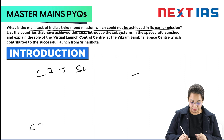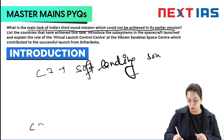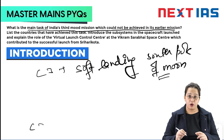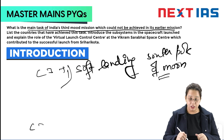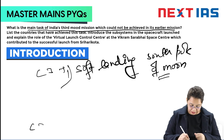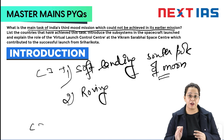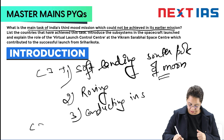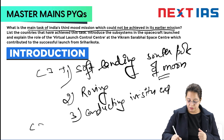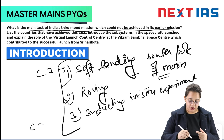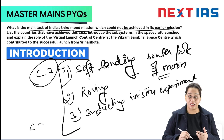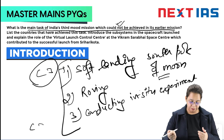What Chandrayaan 3 achieved differently: first, it did a soft landing on the south pole of the moon. India was the first country to do a soft landing on the south pole of the moon — other three countries had achieved soft landing, but not on the south pole. Second, the rover did roving on the lunar surface, which was not done in Chandrayaan 1 or 2. Third, it conducted in-situ experiments, that is, on-site experiments on the lunar surface. These achievements made Chandrayaan 3 different and it was applauded worldwide.